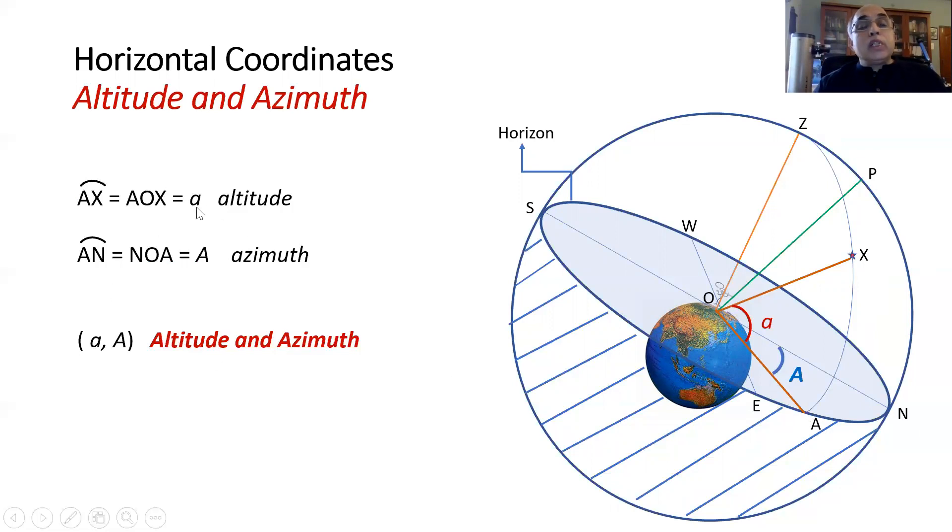For the other coordinate we measure the angle subtended by the north point O to where this meets the horizon. NOA gives you the azimuth angle.